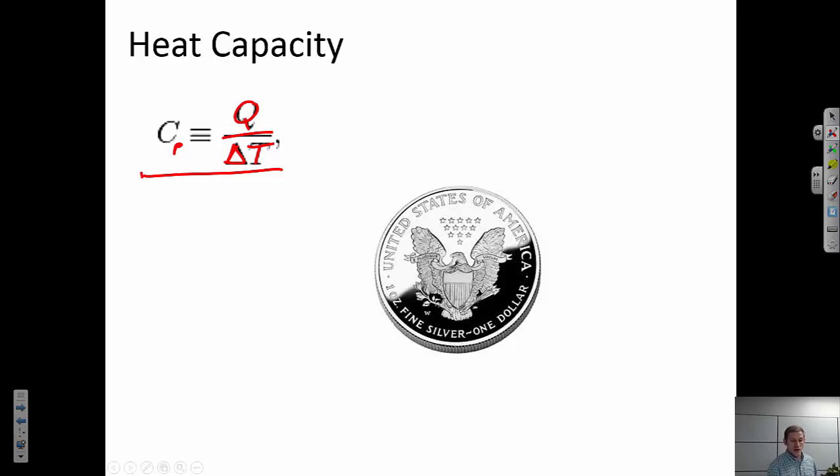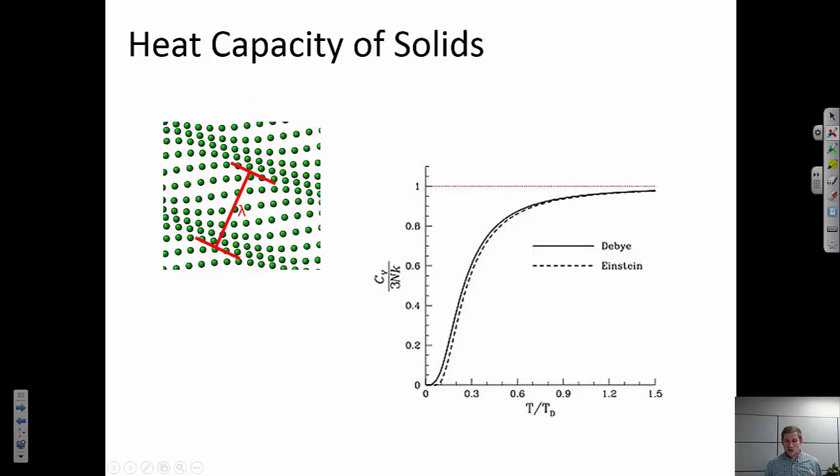So every material has some heat capacity. Now, what affects heat capacity on the material level? And even more importantly, where is that heat being stored? The largest contribution to heat capacity is lattice vibrations. As I keep heating up a material, the lattice can vibrate more and more in different directions.